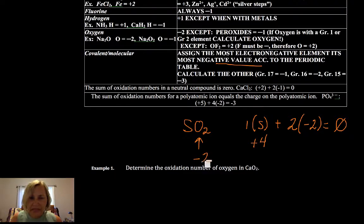You make it as negative as it can be, which is a negative 2. And then you calculate the other element.